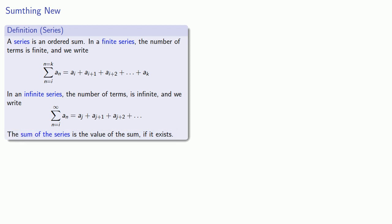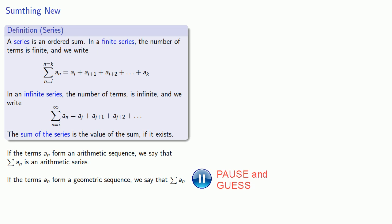One thing we commonly do is omit the indices to refer to a generic series. Since a series is an ordered sum, then the terms of that sum form a sequence. Now if those terms form an arithmetic sequence, we say that the sum is an arithmetic series. If the terms of our series form a geometric sequence, we say that our sum is a geometric series.